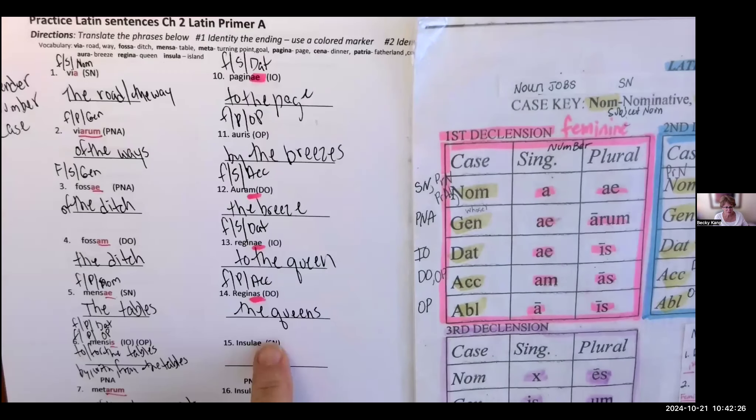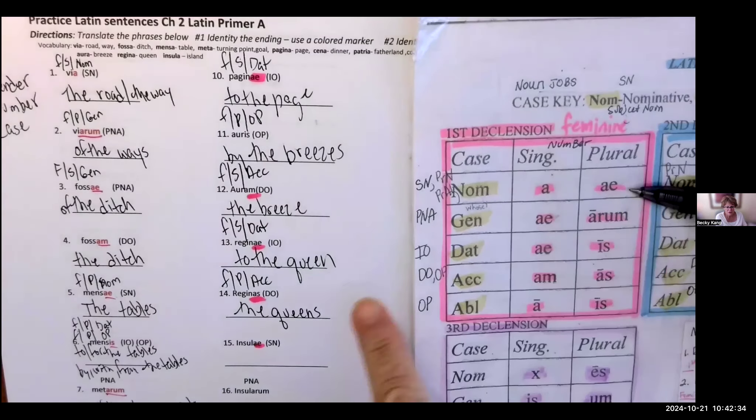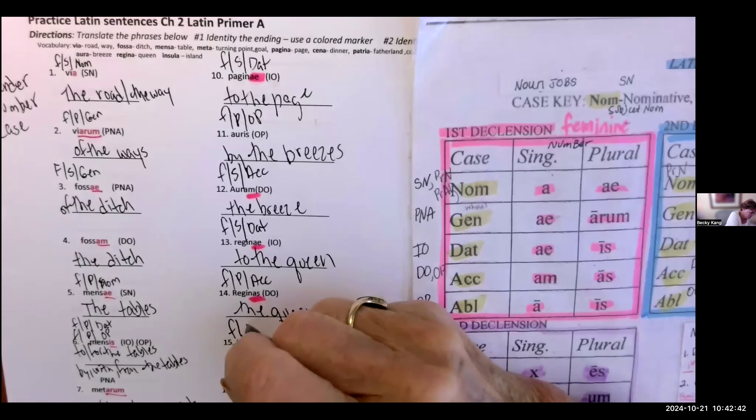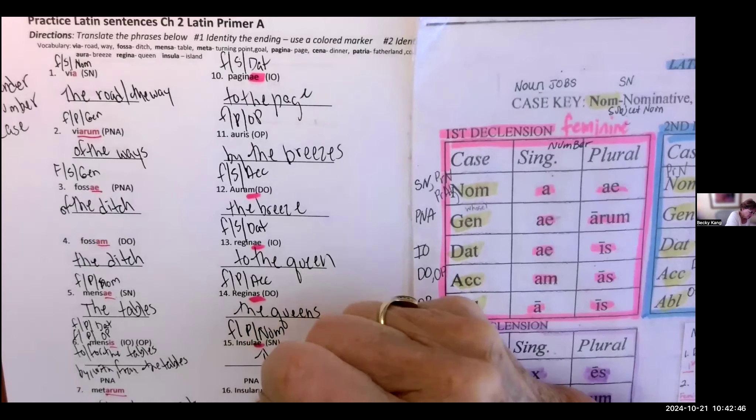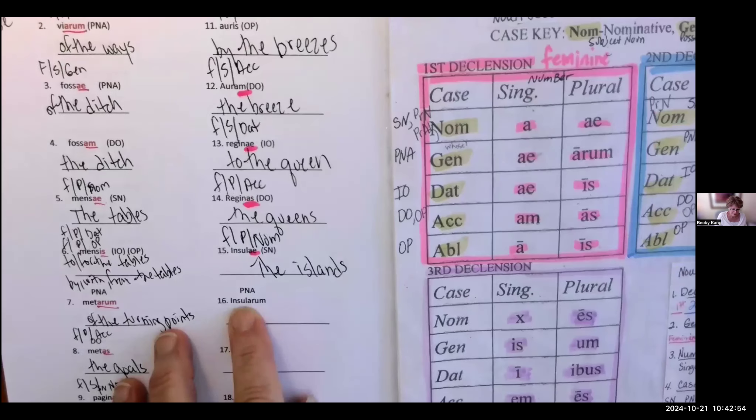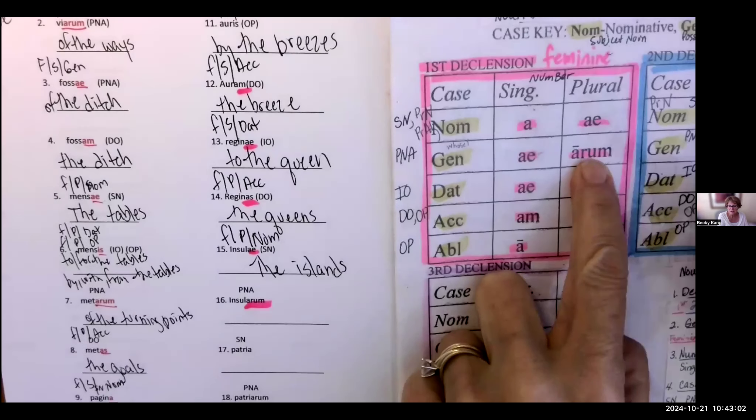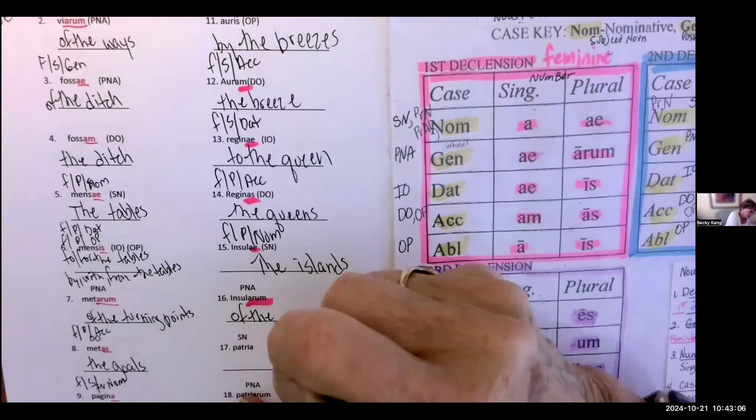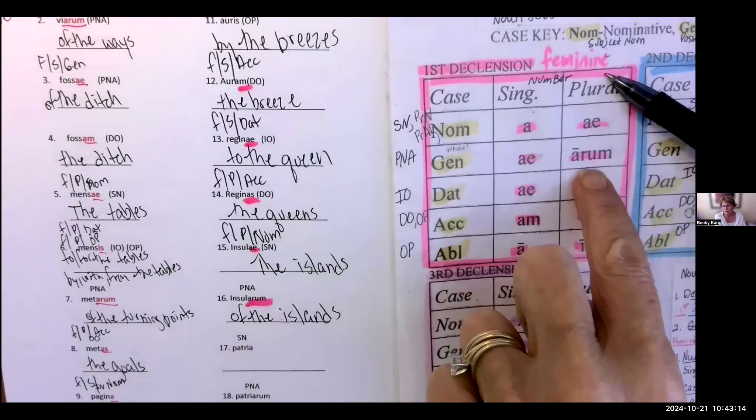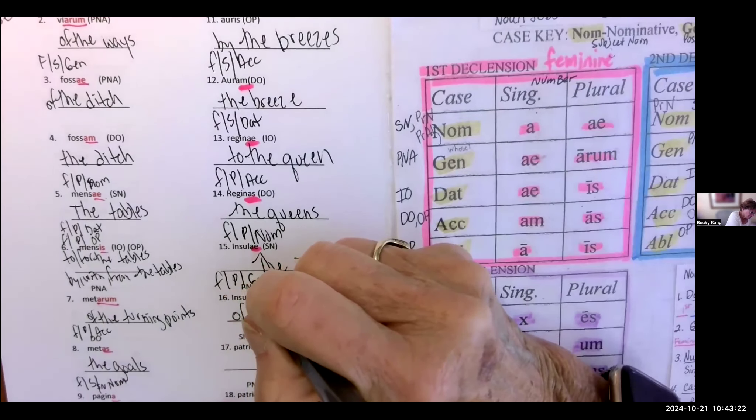Insulai. Island. Okay. What's that ending? Ae. All right. Let's take a look at that ae. Where is it? We could be here, here, and here. Well, I told you it's the subject noun. So it's feminine, plural, and nominative. The islands. All right. Oh, here's the island again. And look at the ending. Arum. All right. That little teeny weeny word. Of the islands. You got to put an of the. Let's look at the gender, the number, and the case. It's feminine. It's plural. And it's genitive.